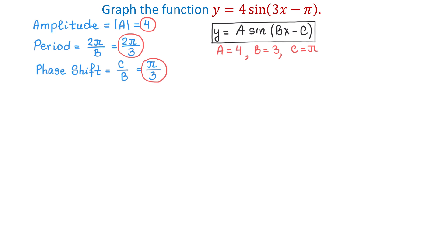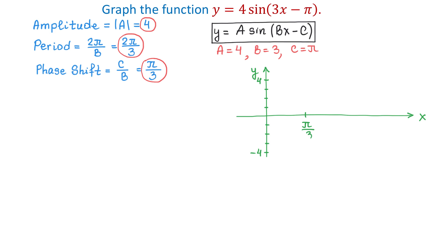Now let's set up the rectangular coordinate system. Because the amplitude is 4, on the y-axis we need 4 units up and 4 units down. The phase shift is pi over 3, which is the x-coordinate where the cycle will begin, so on the x-axis we will plot pi over 3. Here we will have the first point, and the cycle will extend over the period of 2 pi over 3.